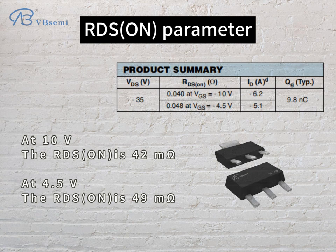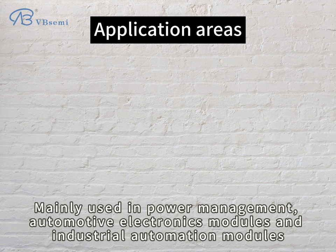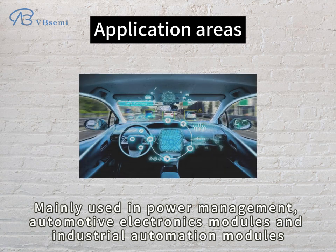At 4.5V, the Rds(on) is 49mΩ. The NTF6P02T3GVB is a P-channel MOSFET for applications requiring negative voltage control and load switching, mainly used in power management, automotive electronics modules, and industrial automation modules.